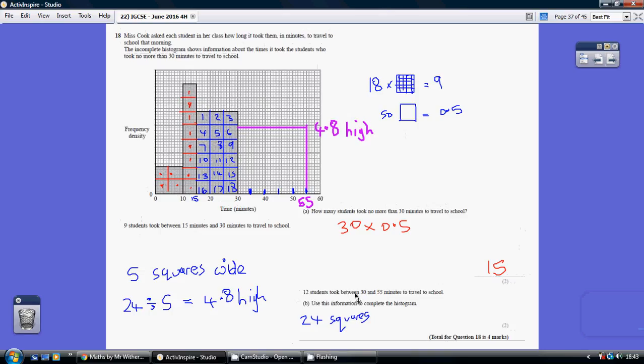Now I'm told that 12 students took between 30 and 55 minutes to travel to school. So that is meant to say 55. I know it looks like 65 but that's 55. So I'm going to spread it from 30 to 55.